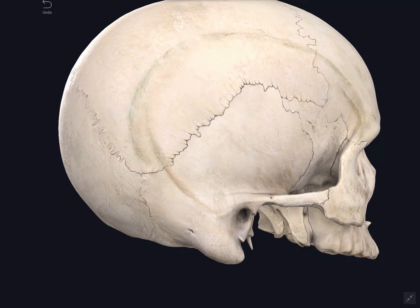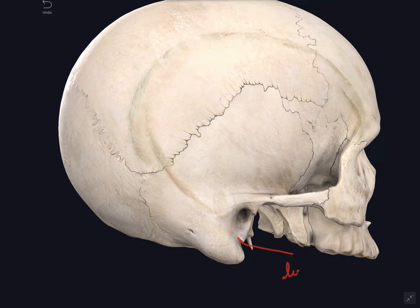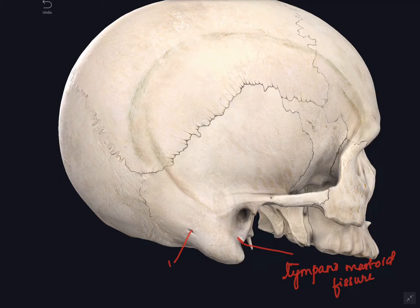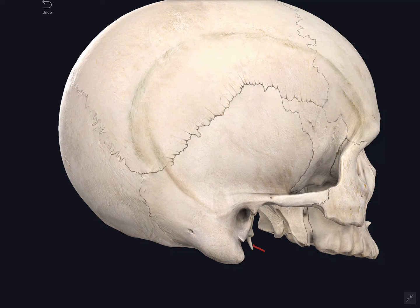In the mastoid part of the temporal bone you can see the mastoid process, which is a projection present posteroinferior to the external acoustic meatus. You can also see a fissure between the mastoid process and the tympanic plate, called the tympanomastoid fissure, and a foramen called the mastoid foramen. The next feature is the styloid process, a needle-like projection just anteromedial to the mastoid process.